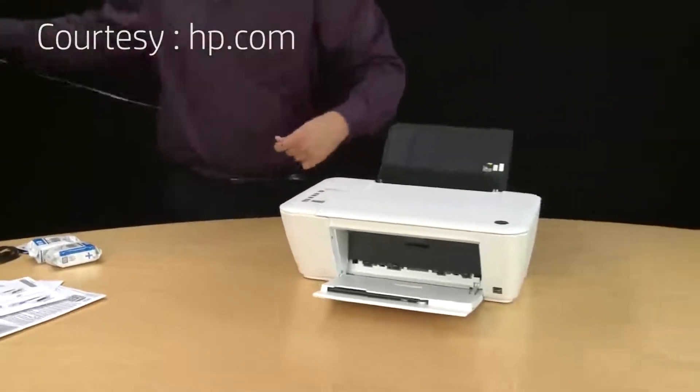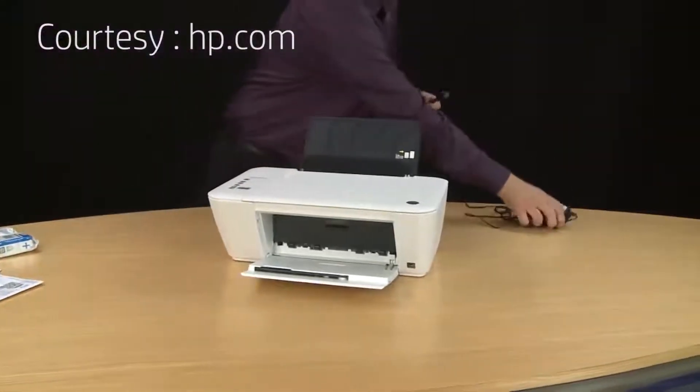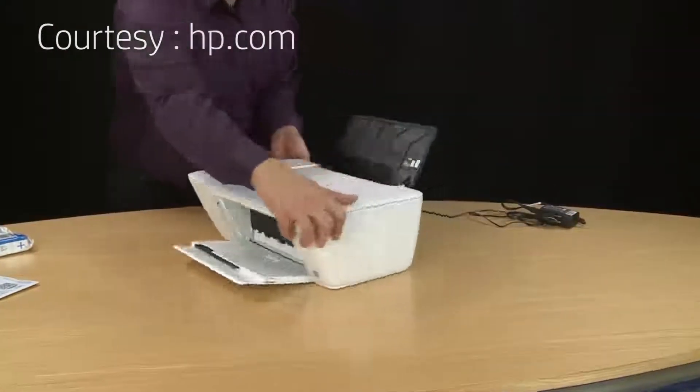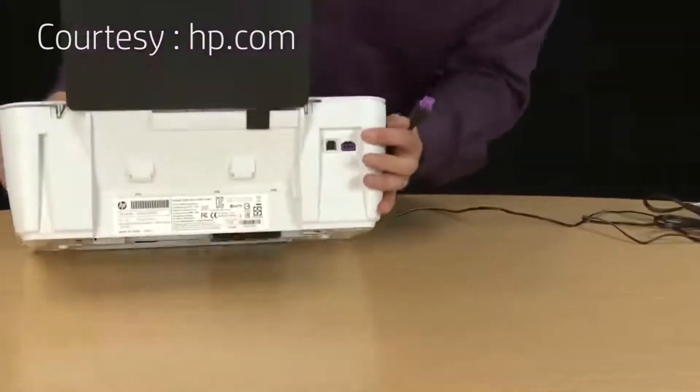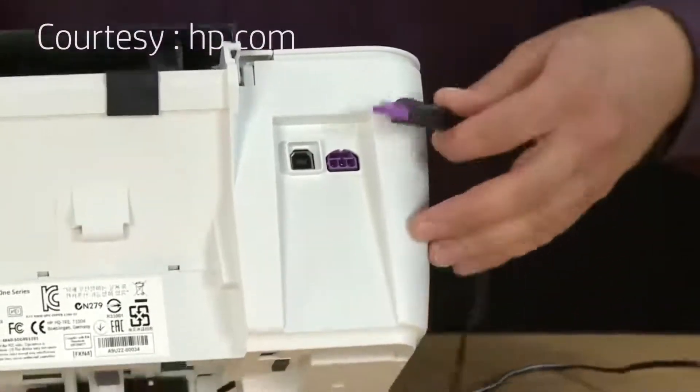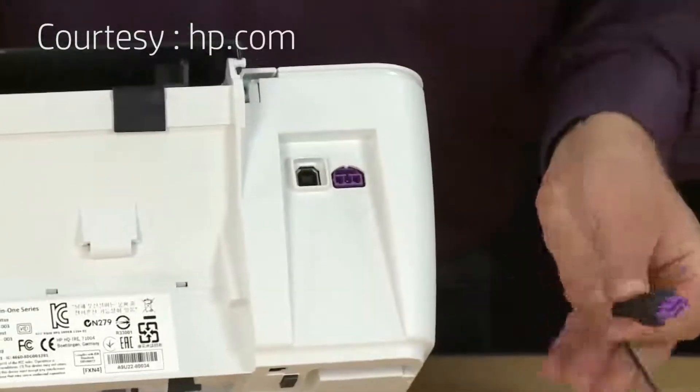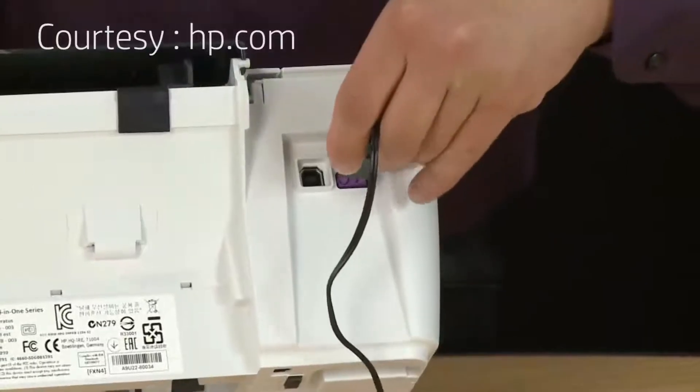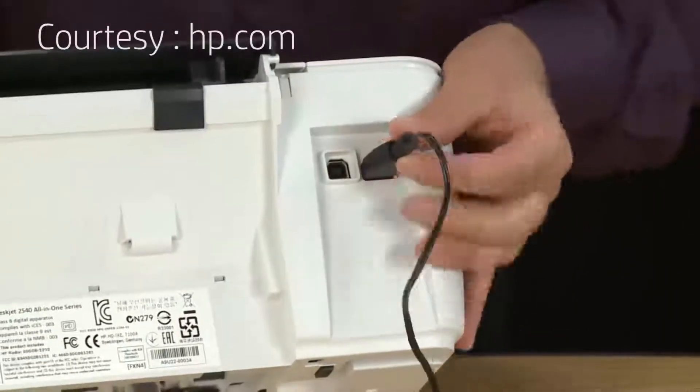Now we're going to plug the power cable into the back of the printer. Turn to the back of the printer and look for the purple port that matches the power cable. Then, making sure the cable is the right way with the tab on top, go ahead and plug it directly into the printer until it's firmly in place.